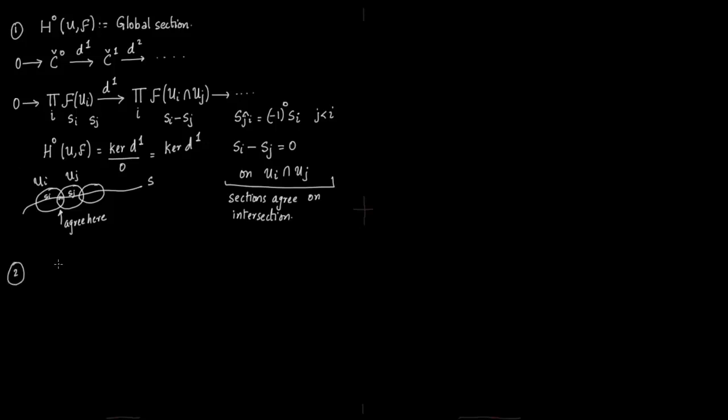That is how you get the global section from the 0th cohomology groups. You take the elements of the kernel which agree on the intersection, glue them together, and you get the global section.